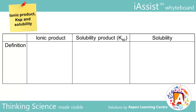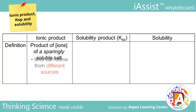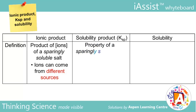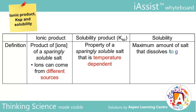The definition of ionic product is the product of the concentration of the ions of a sparingly soluble salt. Note that the ions can come from different sources. Ksp is the property of a sparingly soluble salt that is dependent only on temperature. Solubility is the maximum amount of salt that can dissolve in one dm³ of solution.